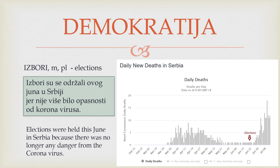One of the pillars of democracy are elections. Izbori — that's a masculine noun and it comes in plural. For example: izbori su se održali ovog juna u Srbiji jer nije više bilo opasnosti od koronavirusa. Meaning: elections were held this June in Serbia, because there was no longer any danger from the coronavirus.